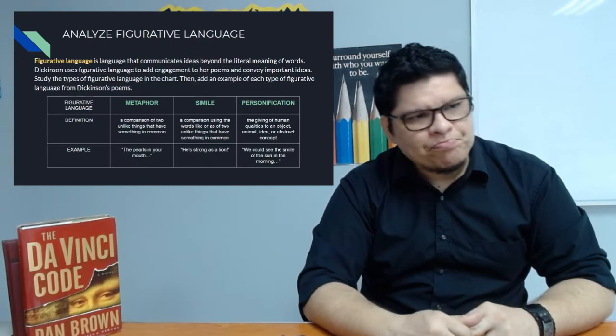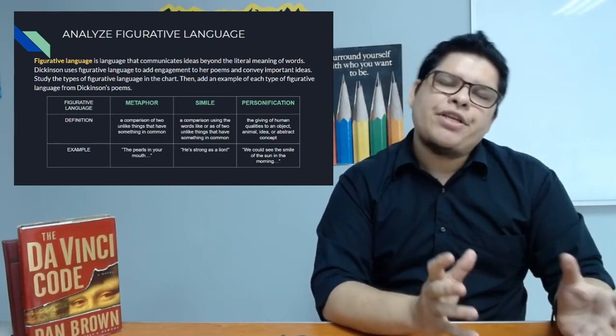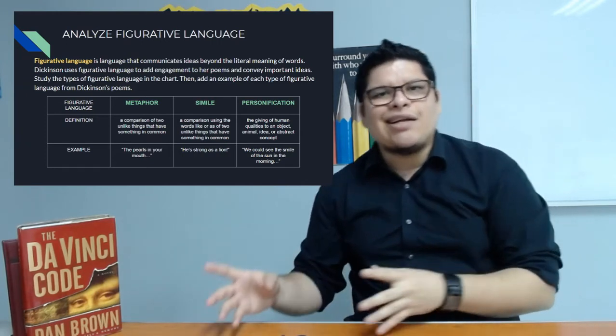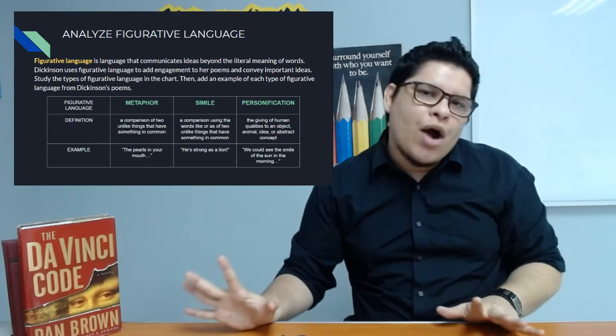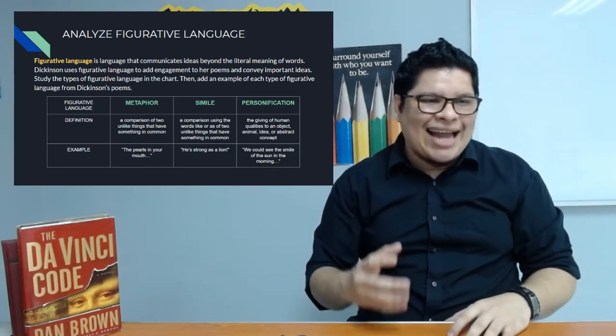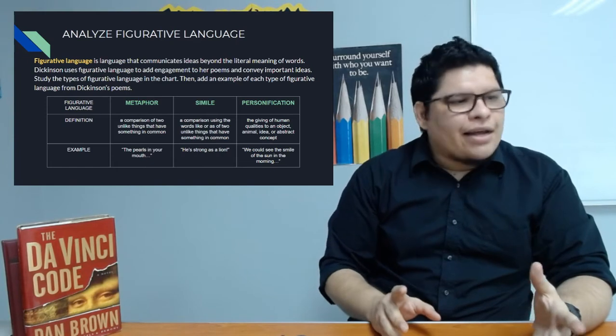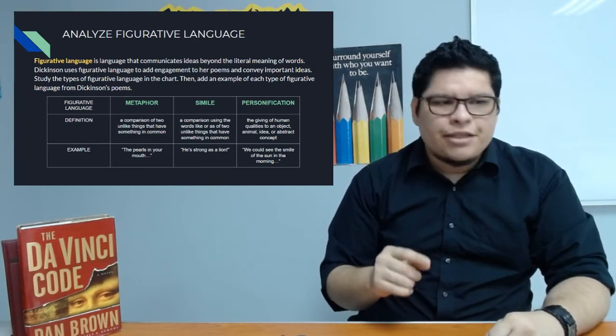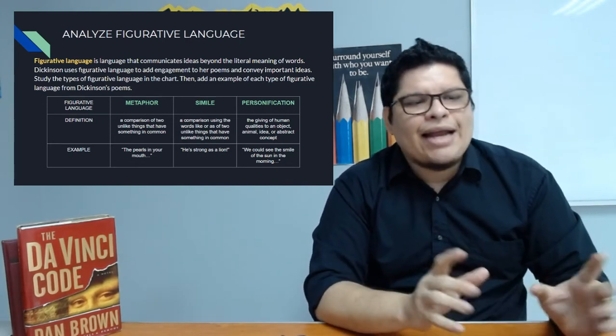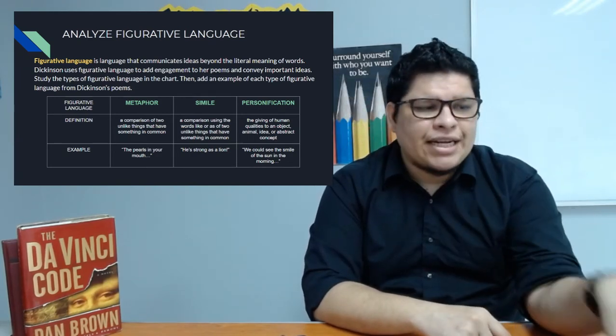In this lesson we're also going to analyze figurative language, which is the type of language that can communicate ideas beyond the literal meaning of the words. That's when we use a word outside its context in order to communicate a different idea that the word itself wants to define or signify. Emily Dickinson uses figurative language to add engagement to her poems and also to convey important relevant ideas. We're going to study the types of figurative language that we have in this chart.